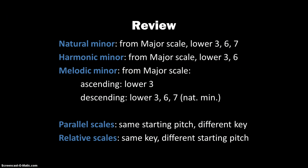One more time through these. The natural minor, changed from the major scale: we're lowering the third, sixth, and seventh. Harmonic minor from the major scale: we're only lowering the third and the sixth. For the melodic minor, ascending we only lower the third — we leave the sixth and seventh as they are in the major scale. Then descending, we lower all three for the natural minor. Parallel scales have the same starting pitch and a different key. Relative scales have the same key but a different starting pitch.